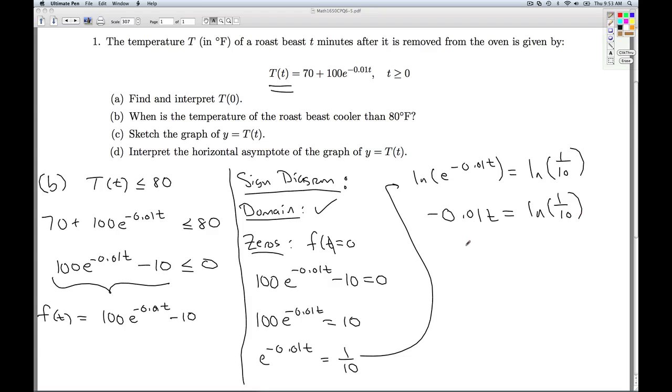Divide both sides by negative 0.01. And simplify. Dividing by negative 0.01 is the same as multiplying by negative 100. And I can rewrite 1 tenth as 10 to the minus 1 and bring that down. And so I get t is 100 natural log of 10. And so that's my critical value.